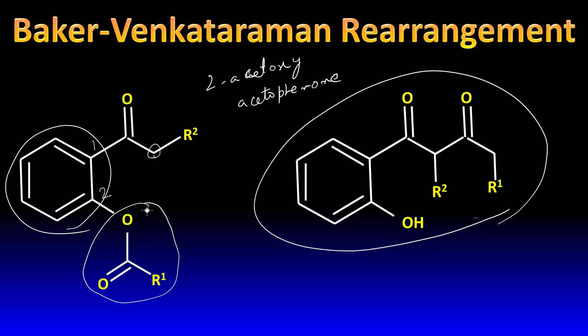You need alpha hydrogens and an ester group—here, a phenolic ester—and that becomes a 1,3-diketone. It's called 1,3-diketone because if you take this as the principal functional group, this is position 1 and this is position 3.